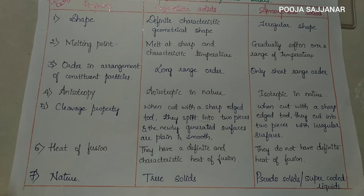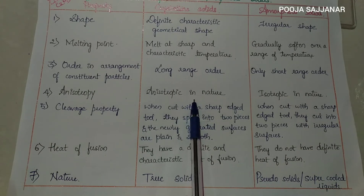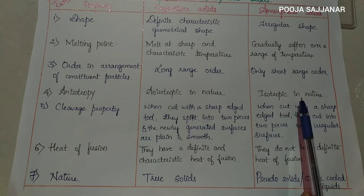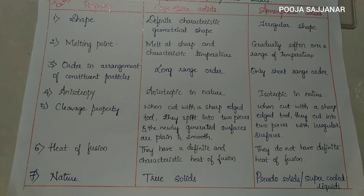The fourth property is anisotropy. Crystalline solids are anisotropic in nature, while amorphous solids are isotropic in nature. Anisotropic means that if we measure physical properties like electrical resistance or refractive index, those will show different values for the same crystal in different directions — measuring a physical property in different directions of the same solid gives different values.